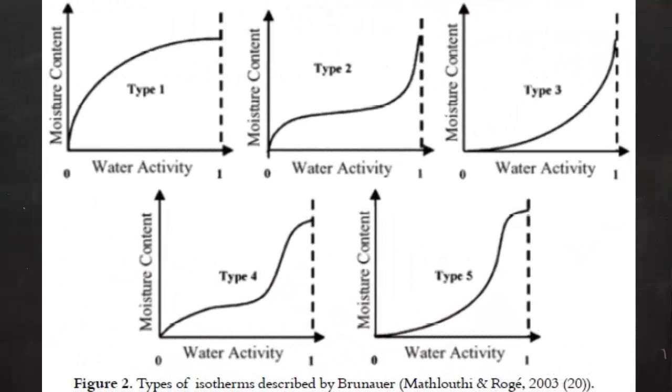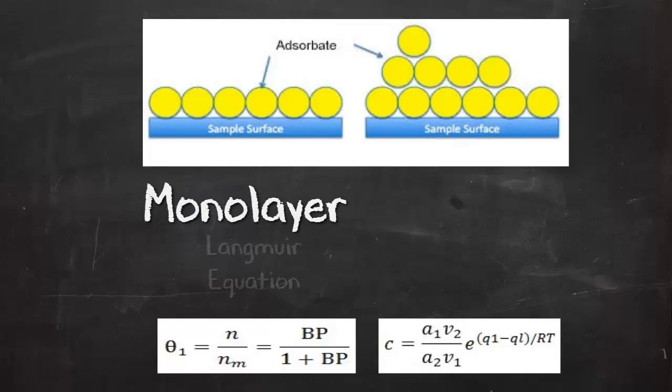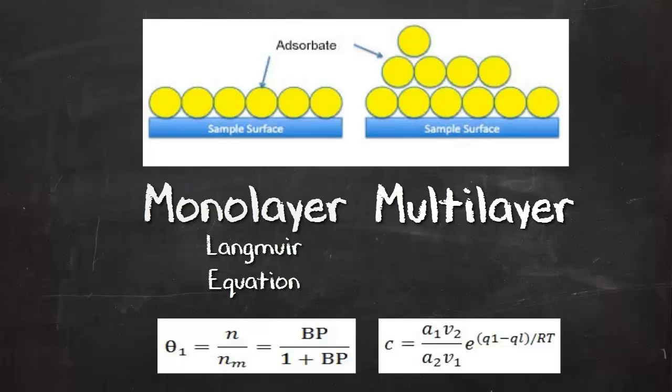In this video, we are focusing on type 3, 4, and 5, despite there being a total of 5 types of isotherm curves. For the monolayer adsorption, Langmuir equation is referred, while for the multiple layer adsorptions, BET theorem is referred.